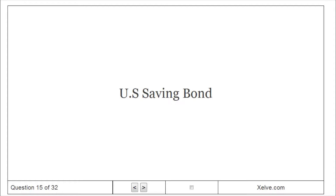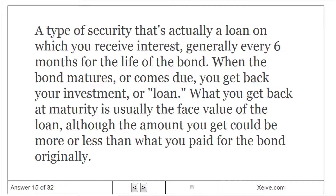U.S. savings bond. A type of security that's actually a loan on which you receive interest, generally every 6 months for the life of the bond. When the bond matures, or comes due, you get back your investment. What you get back at maturity is usually the face value of the loan, although the amount could be more or less than what you paid for the bond originally.